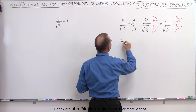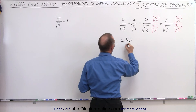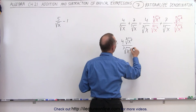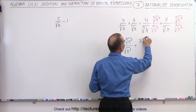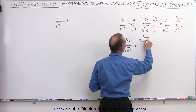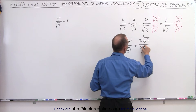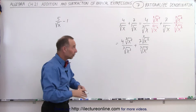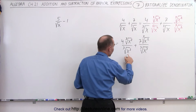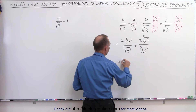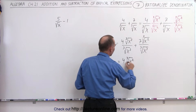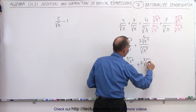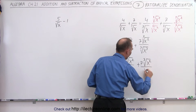This is equal to 4 times the cube root of x squared over the cube root of x cubed, plus 7 times the cube root of x squared divided by the cube root of x cubed. Now you don't have to write this intermediate step — I'm just doing it to illustrate it — but right away you realize in the denominator you just get an x. So this is equal to 4 times the cube root of x squared over x, plus 7 times the cube root of x squared over x.